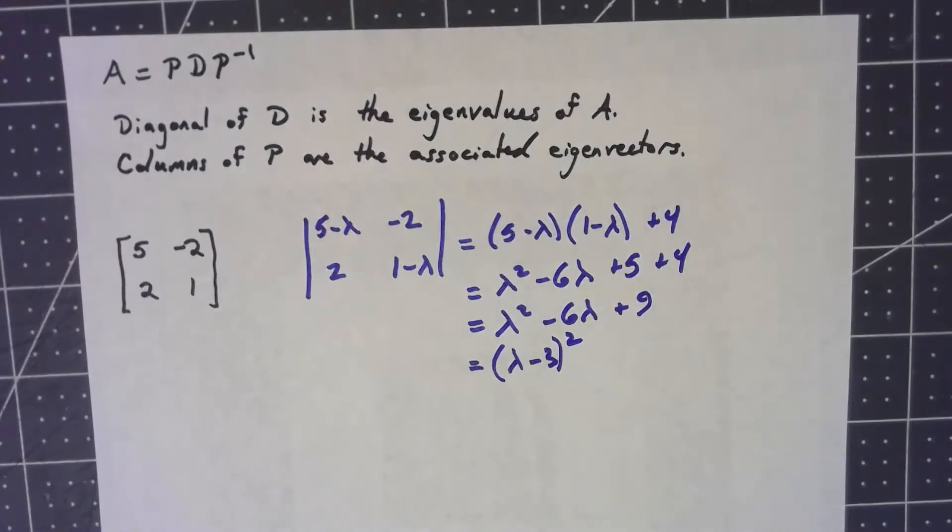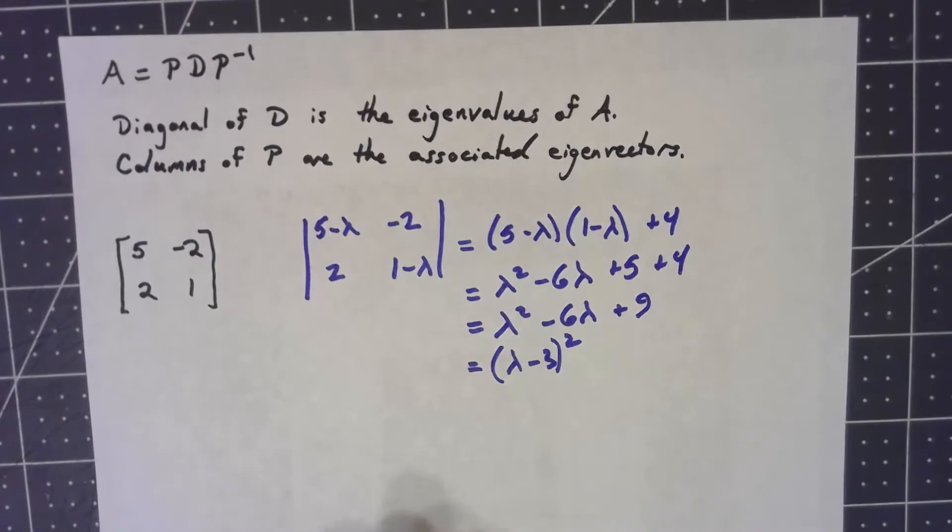This factors as lambda minus three squared. So there's only one eigenvalue, that's three. Now one of the things we mentioned along the way in terms of eigenvalues is that if all the eigenvalues are distinct, then we had a basis of eigenvectors. But now because we got a single eigenvalue of multiplicity two, it may or may not be possible to find a basis of eigenvectors.